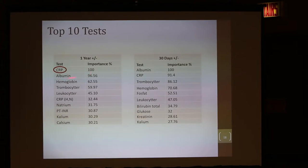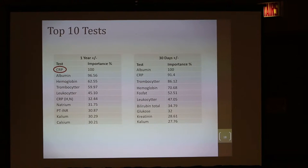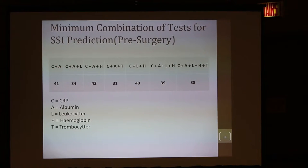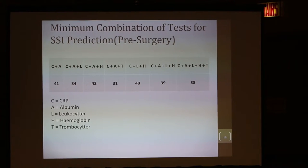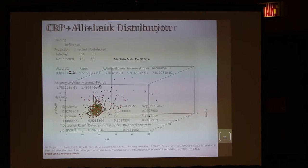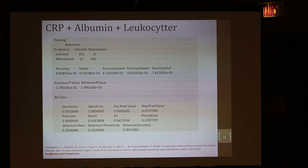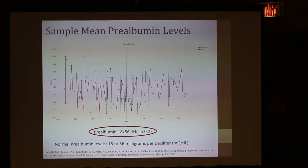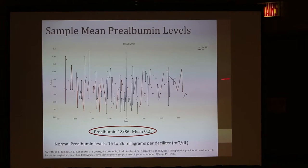The question was: can we use just one test or a combination to be tracked over time by providers? With a single test, there are many disparate situations where CRP can be abnormal, and sensitivity and negative predictive value will go down. So we tried all different combinations. CRP, albumin, and leukocytes gave the most significant sensitivity, specificity, positive predictive value, and negative predictive value. Some publications also implicate prealbumin, but in our dataset there were only a few patients with prealbumin tests, and it was not significant.